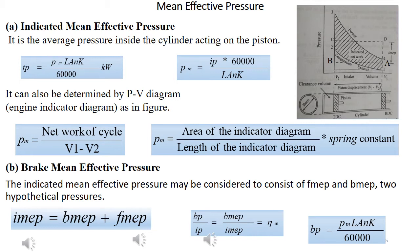So, IMEP, that is, indicated mean effective pressure is the average pressure inside the cylinder acting on the piston. So, IP is equal to, we already know it, as we discussed in the previous slide, it is plant divided by 60,000 into number of cylinders. So, from this, PM equals IP into 60,000 divided by LANK.